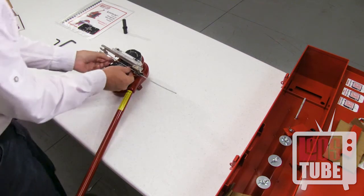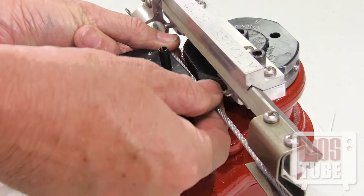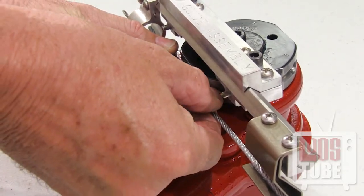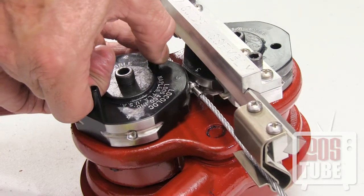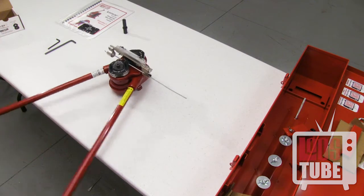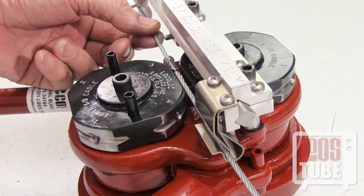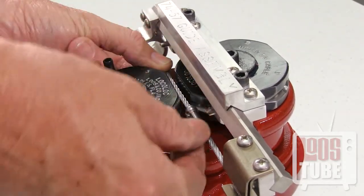For the third pass, rotate the fitting only 45 degrees. For the fourth pass, rotate another 90 degrees and swage.